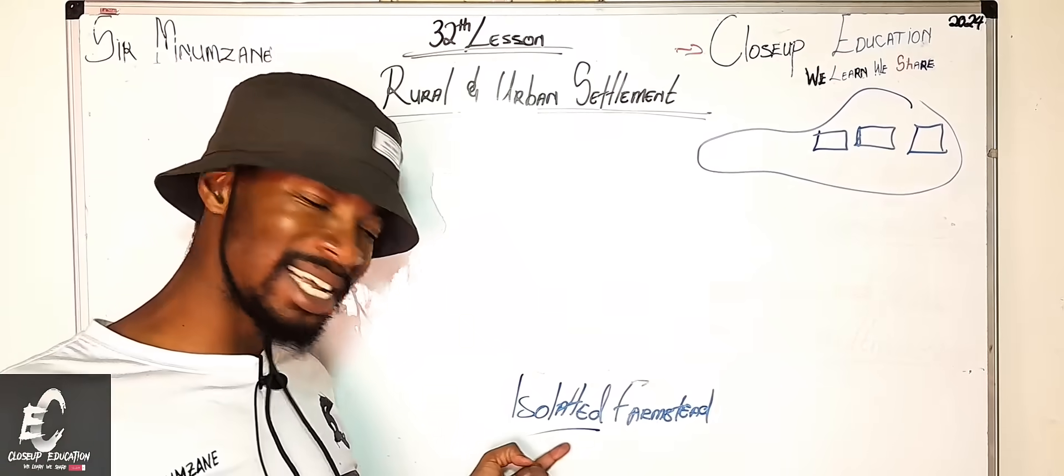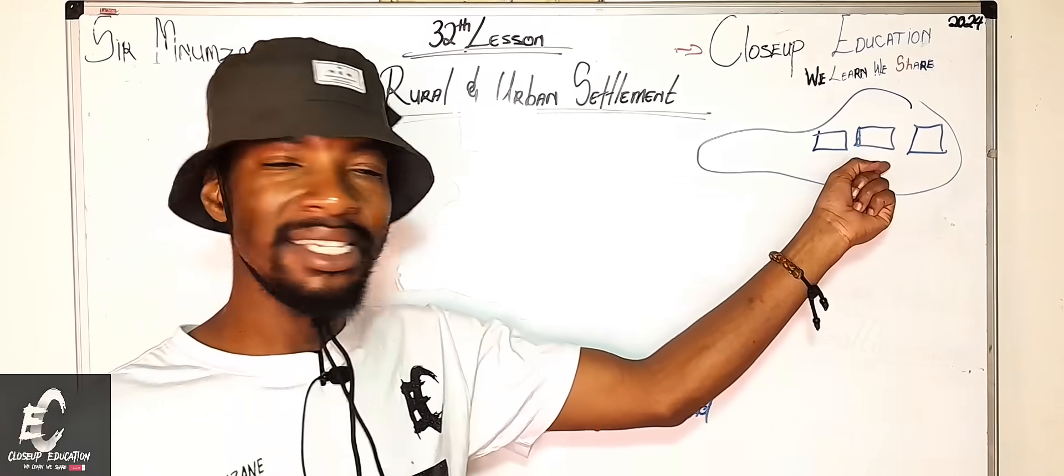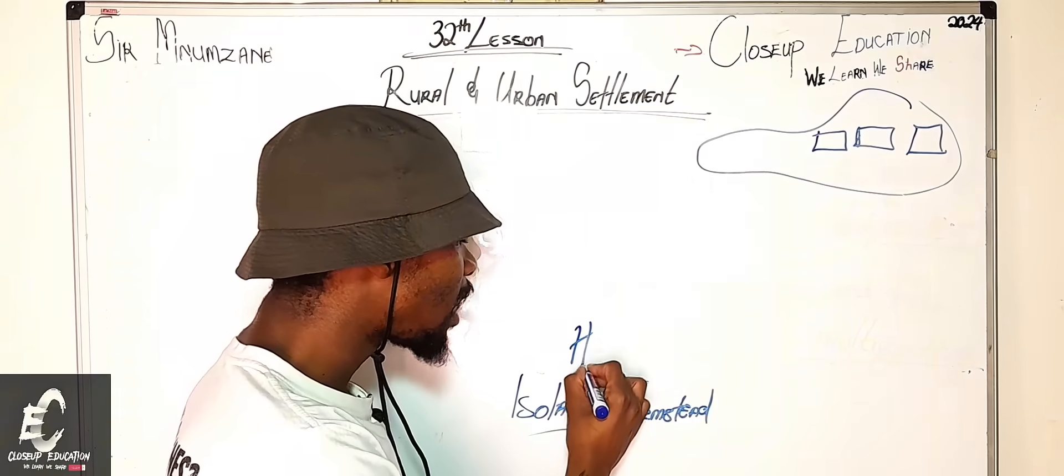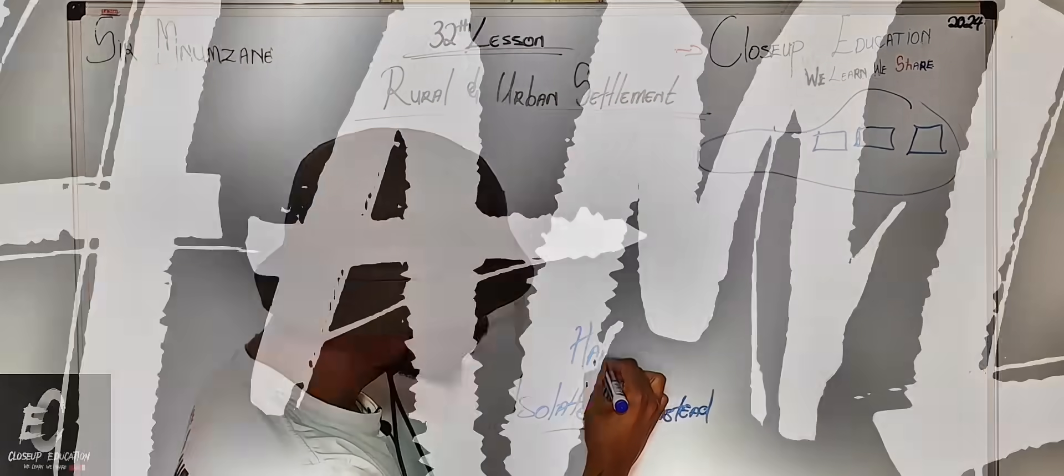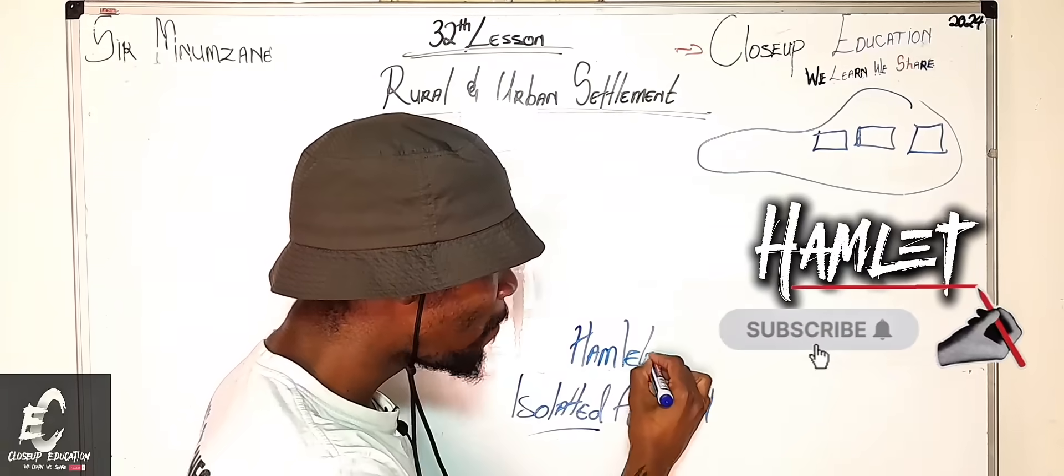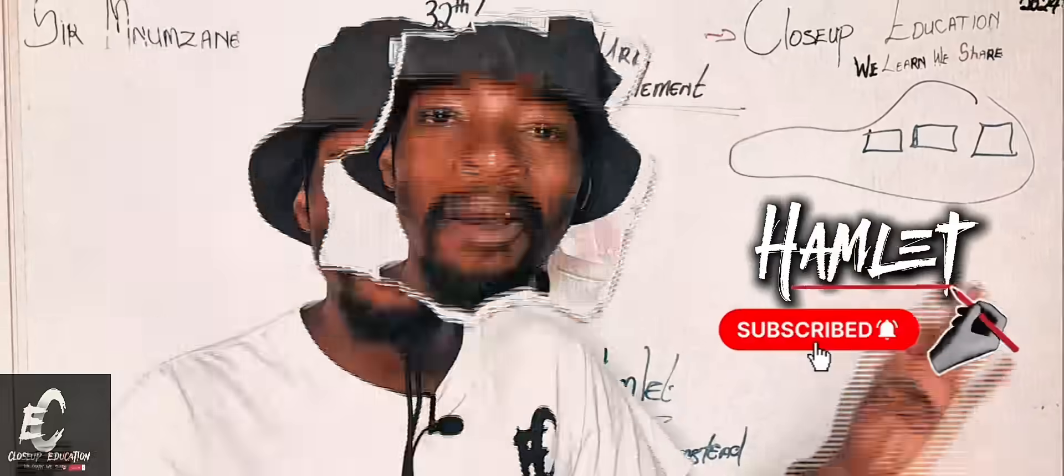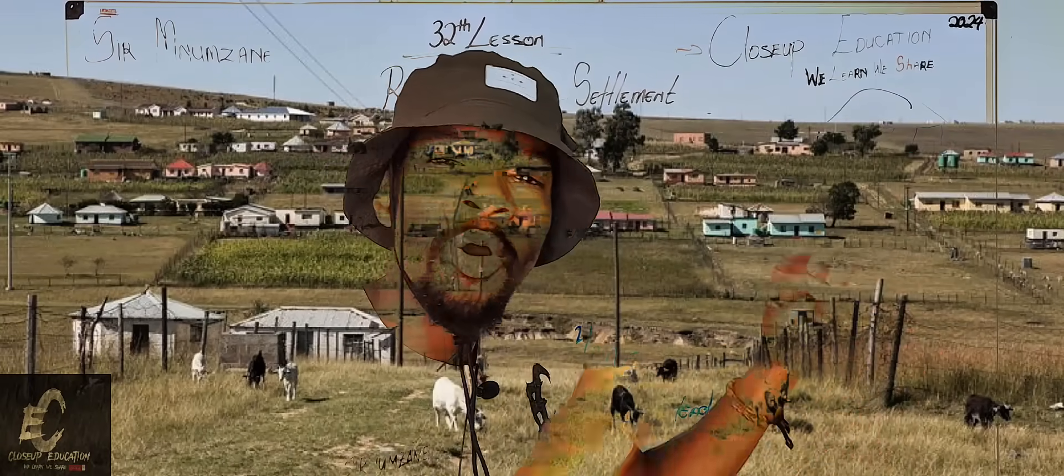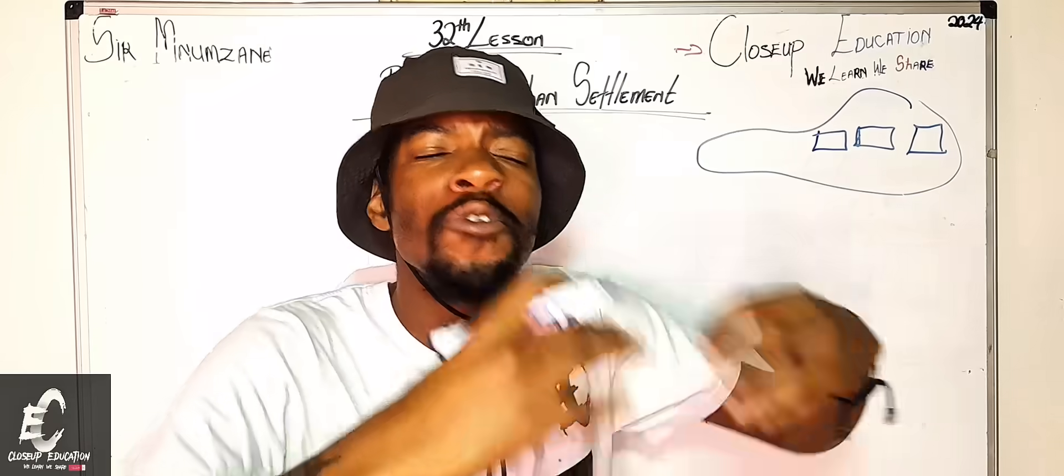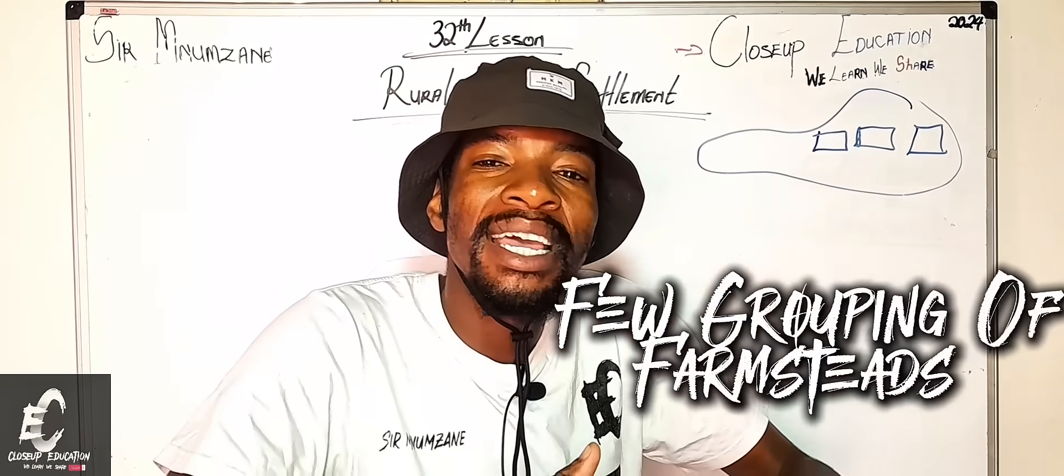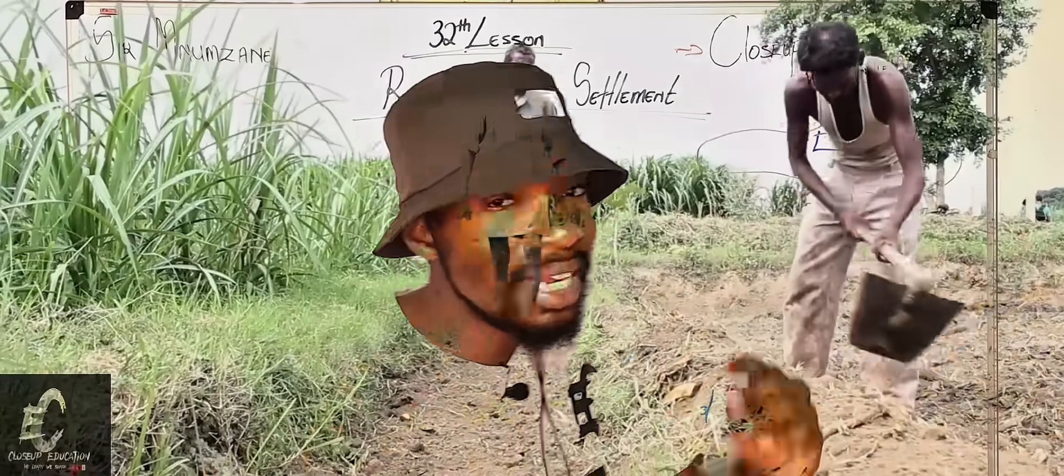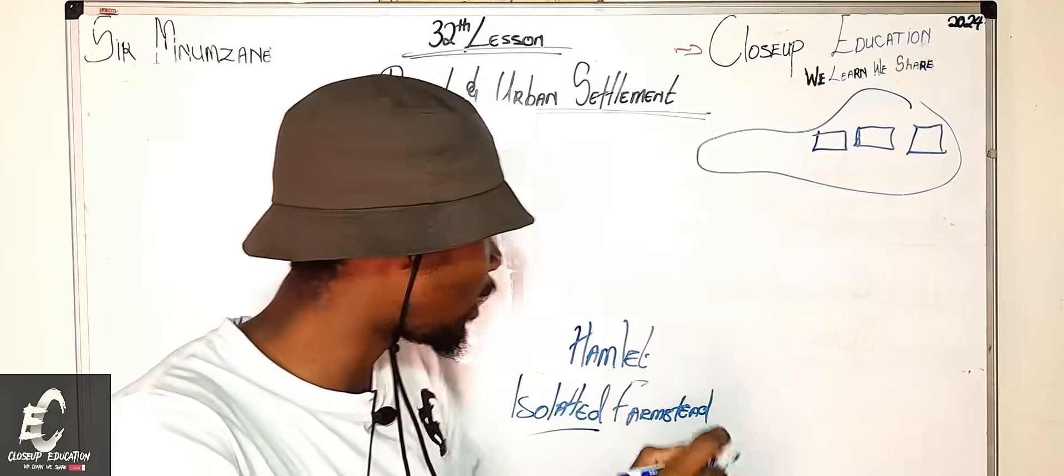Guys, now that we can see more than maybe one farmstead, remember this was an isolated farmstead. Now we are seeing a few farmstead. Now it has come onto a hamlet. So a hamlet is now created. A hamlet is whereby there are now few farmstead on a settlement which mainly focuses on primary activities. We are done.